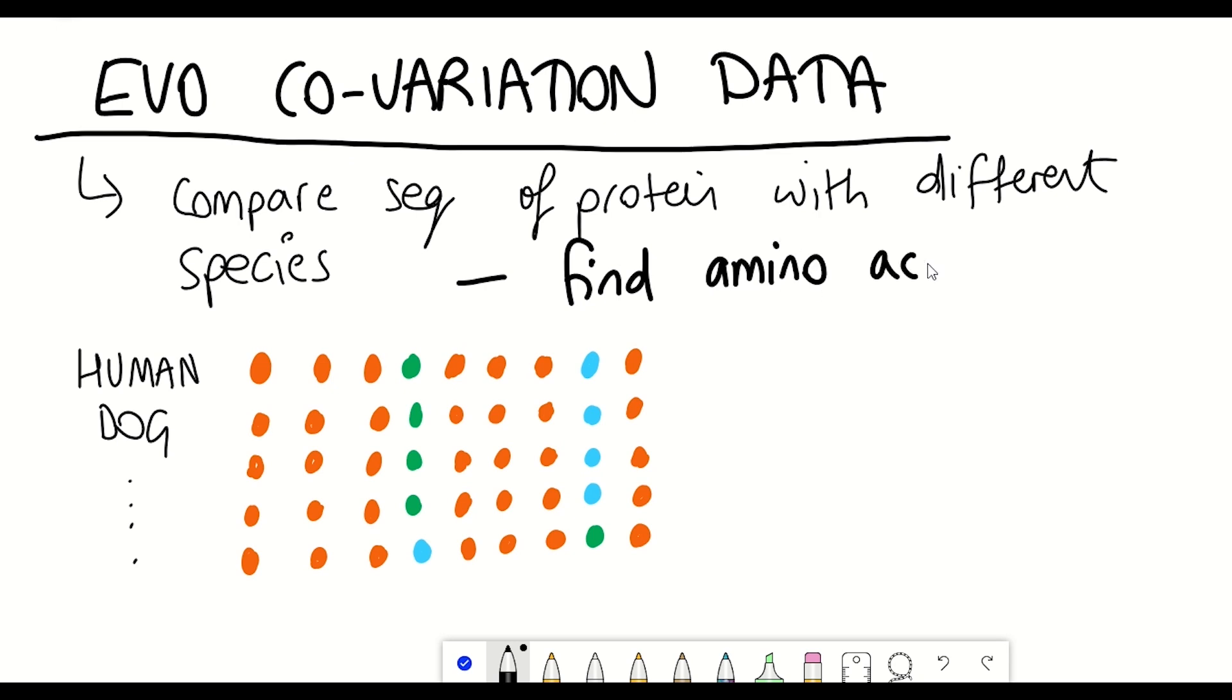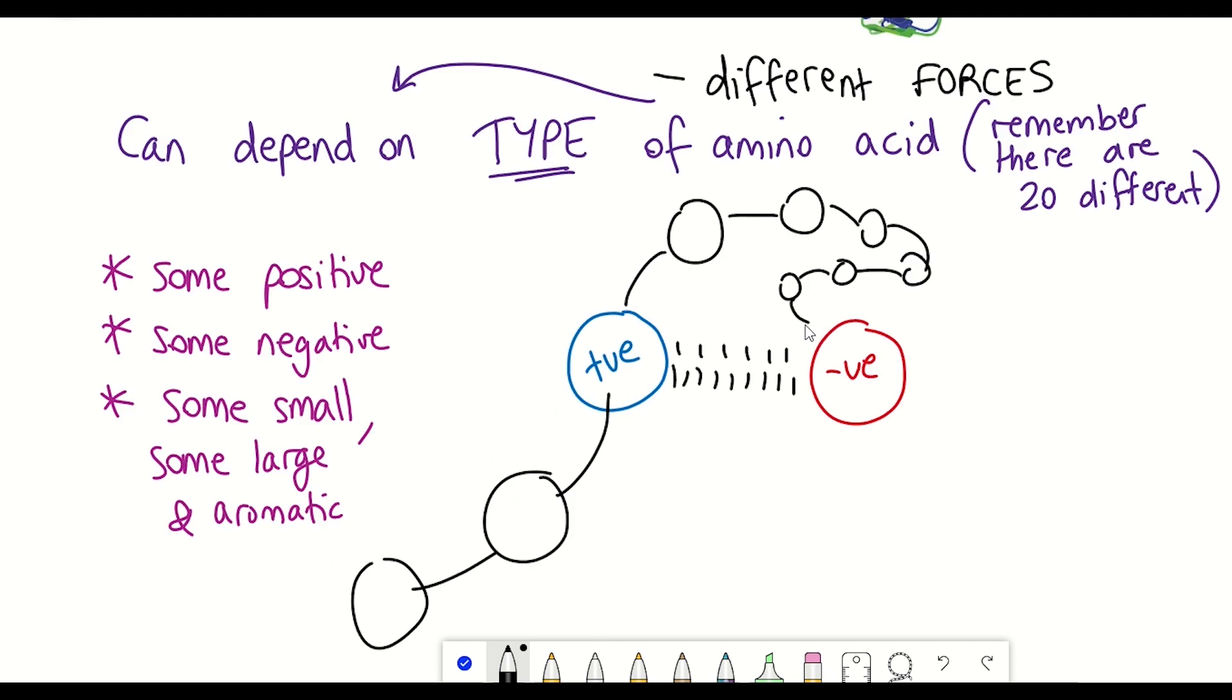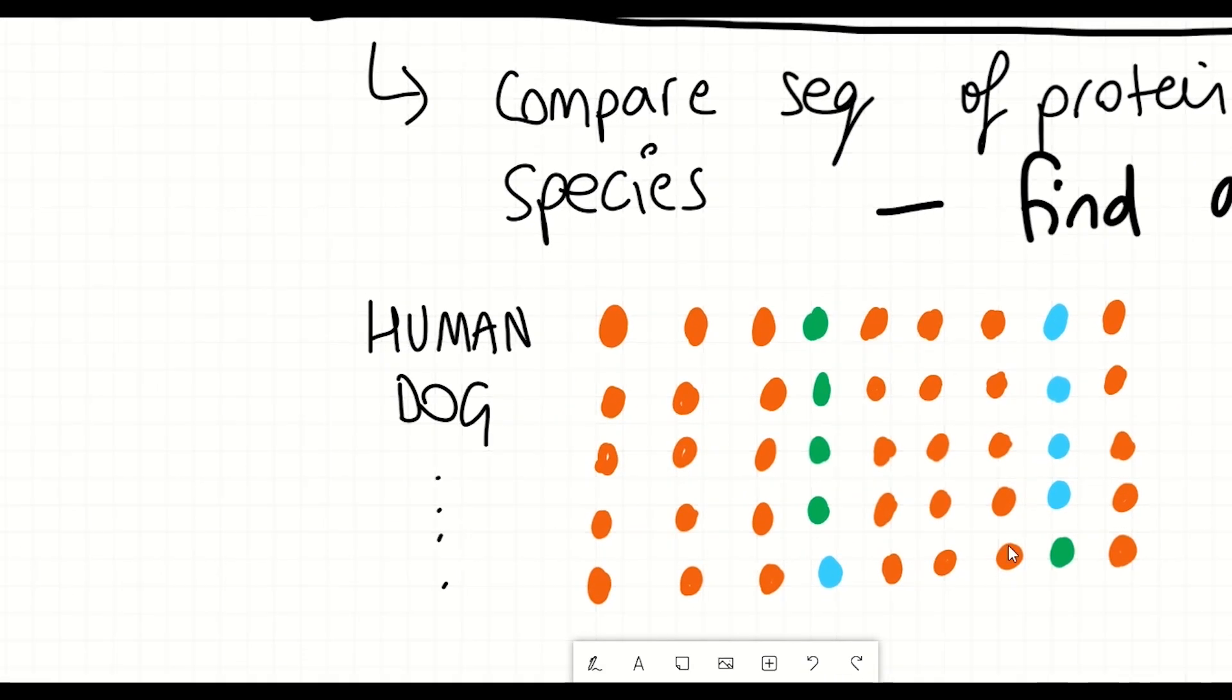Now, this is really important for identifying amino acids that are really important in the folding process. And so if we go back to that example I mentioned earlier about having a positively charged amino acid and a negatively charged one that are forming an interaction in 3D space that's important for the final structure of a protein, I can generate a hypothetical example to try and explain to you the importance of this evolutionary co-variation data.